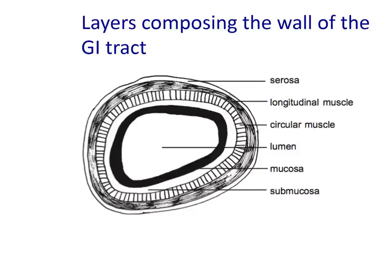The outer layer is called the serosa, composed of loose connective tissues with a serous membrane on the external surface of the bowel. Like all serous membranes, it secretes small volumes of serous fluid — a fluid derived from the serum, that is from the plasma — which acts as an external lubricant, allowing sections of bowel to move freely over each other.